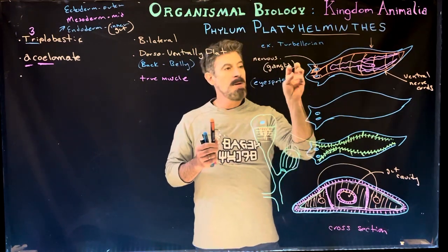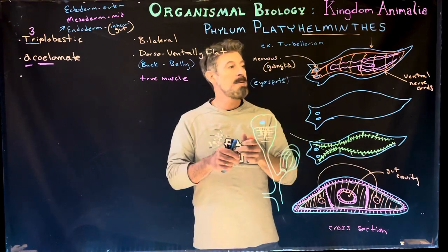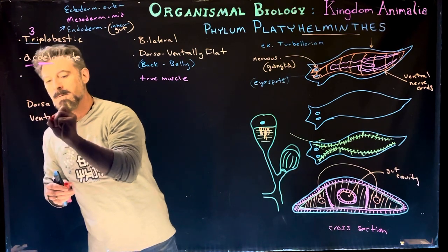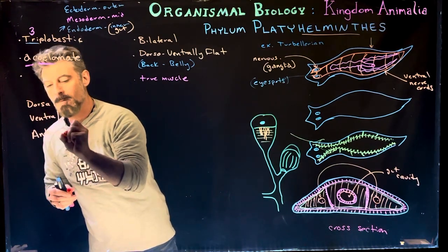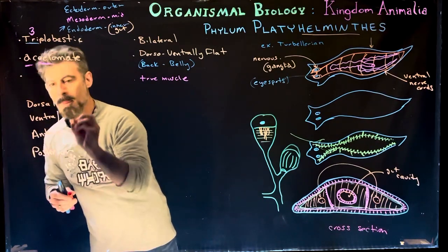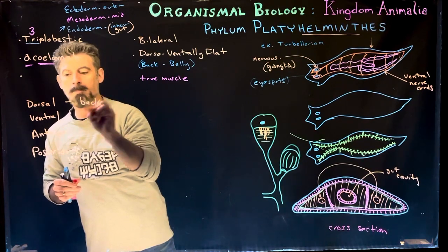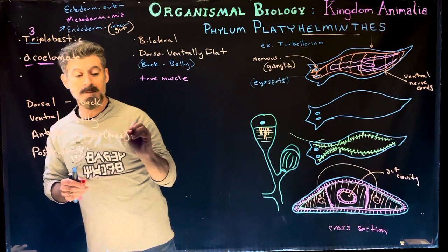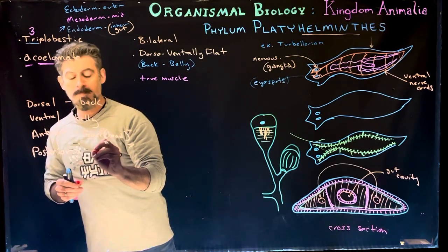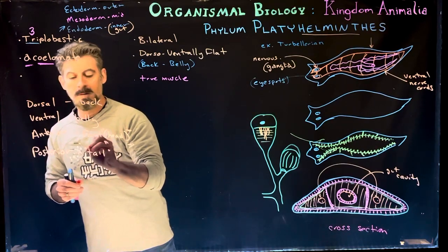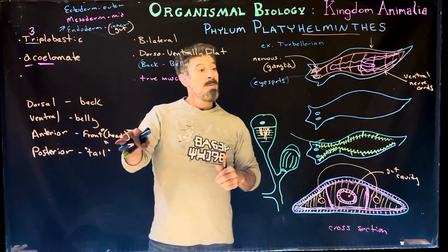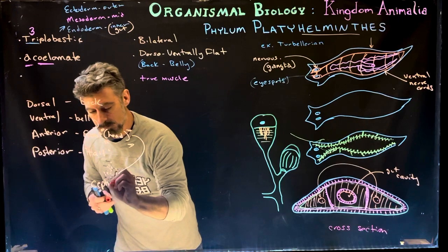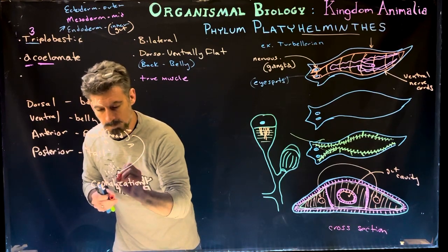So that's the nervous system — very simple. They don't have a true brain, but they have nerve ganglia centered in the anterior region. Some key terms: dorsal is the back, ventral is the belly, anterior is the front or head region, and posterior is the tail region. This organism sort of has a head, which is an important characterization.